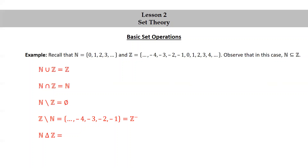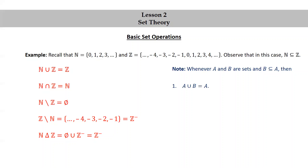The symmetric difference between ℕ and ℤ is the union of the previous two. It's the empty set union ℤ⁻, which is just ℤ⁻. Note that whenever A and B are sets and B is a subset of A, then the union of A and B is just A, the intersection of A and B is just B, and B minus A is the empty set.